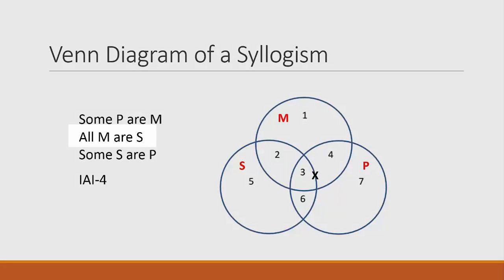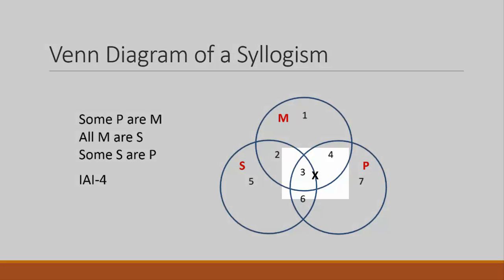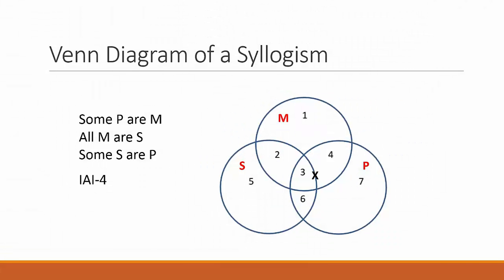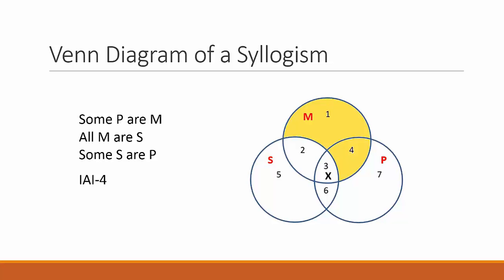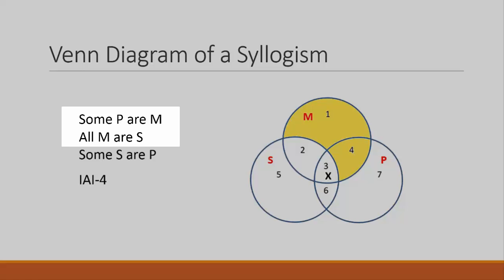Now for the second premise: all M are S. The areas where there isn't anything — in this case areas 1 and 4 — are shaded. We should shade areas 1 and 4, but there's a problem: we've already added the X on the line between 3 and 4, but area 4 is supposed to be empty. So we redraw the X and place it just in area 3, then shade areas 1 and 4. Now both premises are displayed. However, there is an easier way: if you have a particular and a universal claim in the premises, draw the universal claim in the Venn diagram first, then you won't have to move the X.